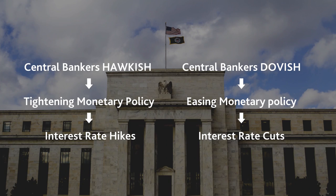Put simply, when there is a hawkish tone, there are talks about tightening monetary policy which will probably lead to interest rate hikes. On the other side, a dovish central bank will use easing or accommodating monetary policy which will result in interest rate cuts. Recently, major central banks of key economies have turned dovish due to slowing global growth.